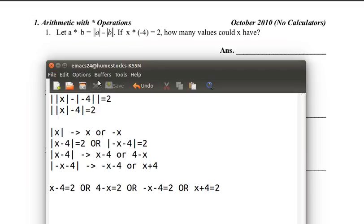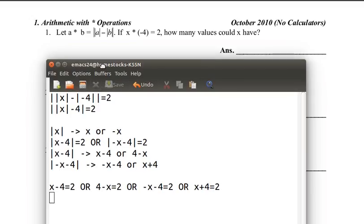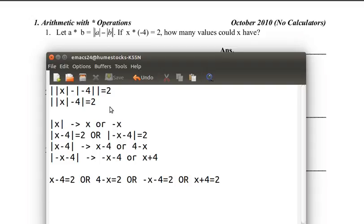Now we have four equations, so there's four values of x. If you want to make sure there's four values of x, you can check that none of the equations have the same solution by solving all of them. So x equals 6, x equals 2, x equals negative 6, x equals negative 2. Those are our solutions.